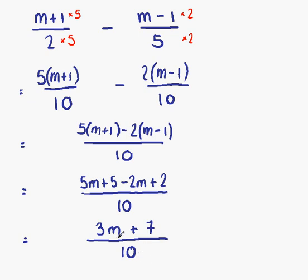So, our new fraction is 3m plus 7 over 10. What we need to do now is to see if it can be simplified. Now, at present, there's no way we can simplify it.